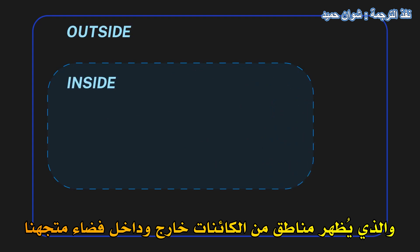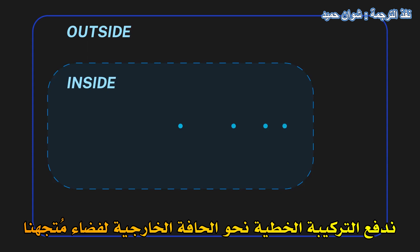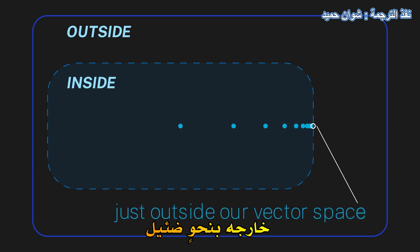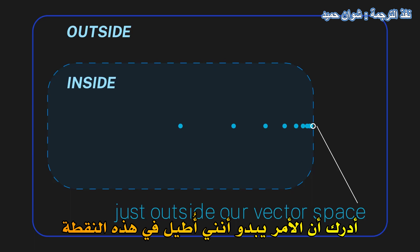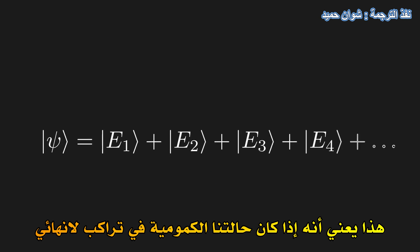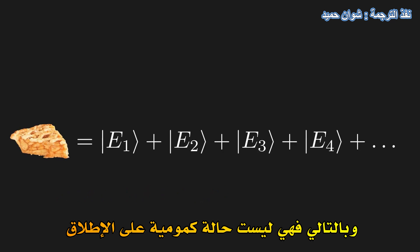I like to think of it in terms of this diagram, which shows regions of objects outside and inside our vector space. The first term in the linear combination gives us some element in our vector space. As we add more terms, we push the linear combination towards the edge of our vector space. And in the limit of infinite terms, we end up right on the edge of our vector space, barely outside it. It really is important that we understand why introducing infinity into a vector space is risky. So what does this mean for our quantum vector space? It means that if our quantum state is in an infinite superposition of outcome states, then there's a chance this quantum state is outside our vector space, and therefore not a quantum state at all. This is a huge problem!